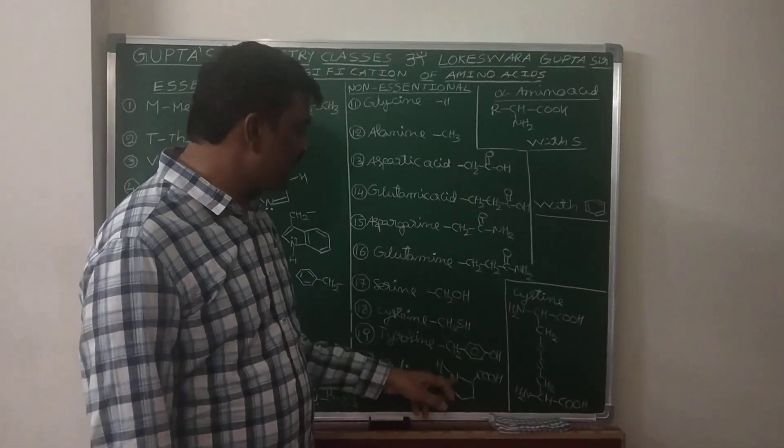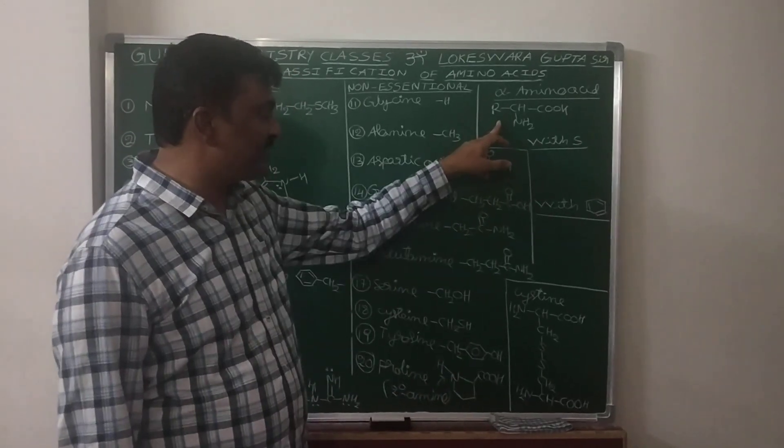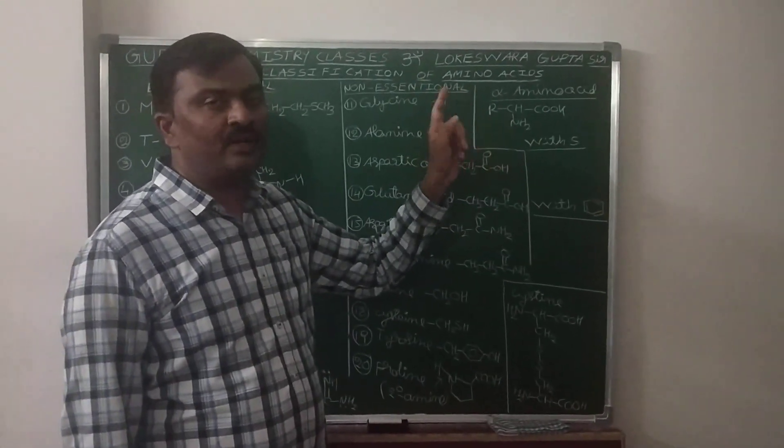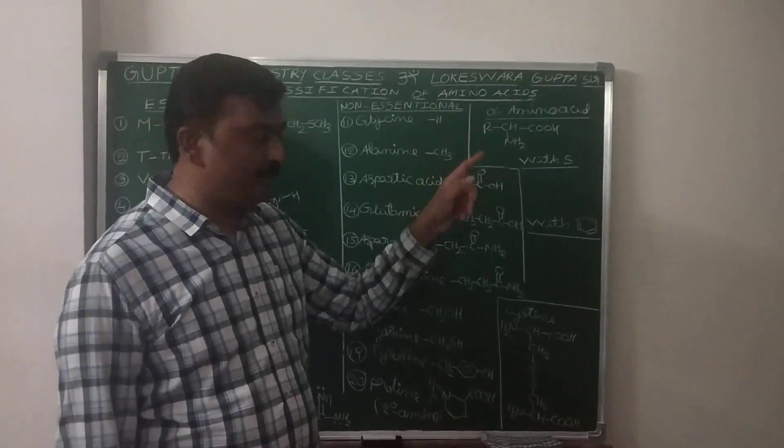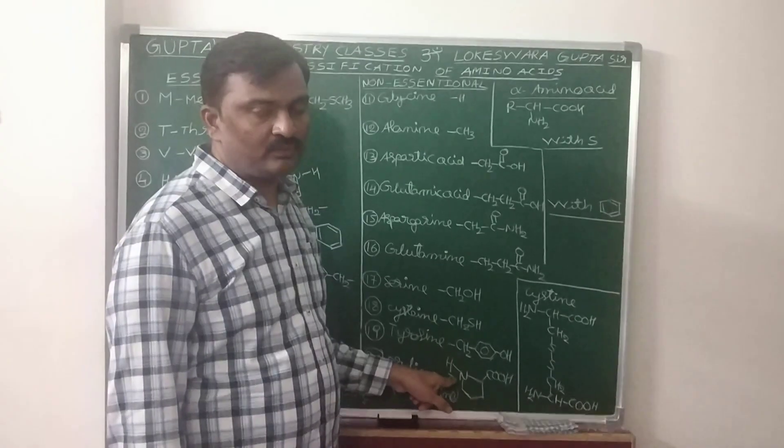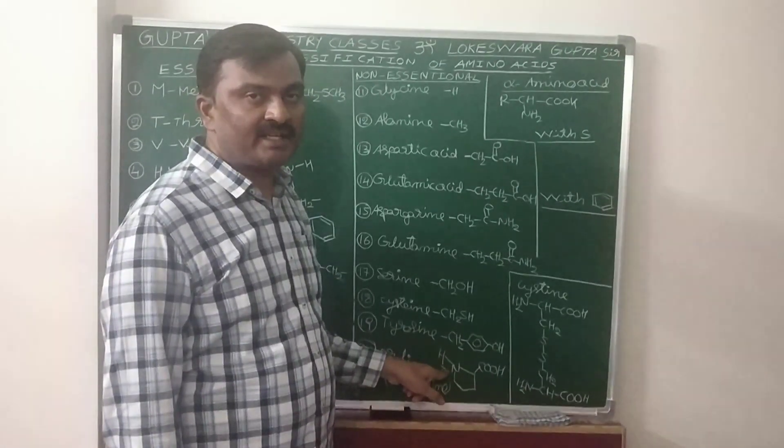Here proline will not satisfy this formula. Out of 20, 19 alpha amino acids are primary amines. Only proline is the secondary amine.